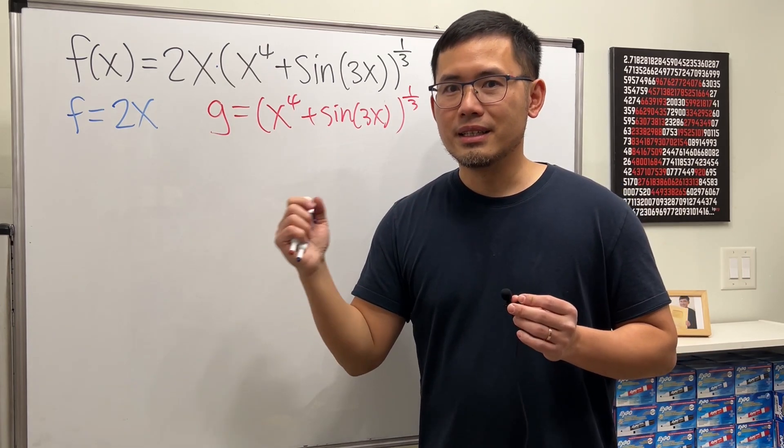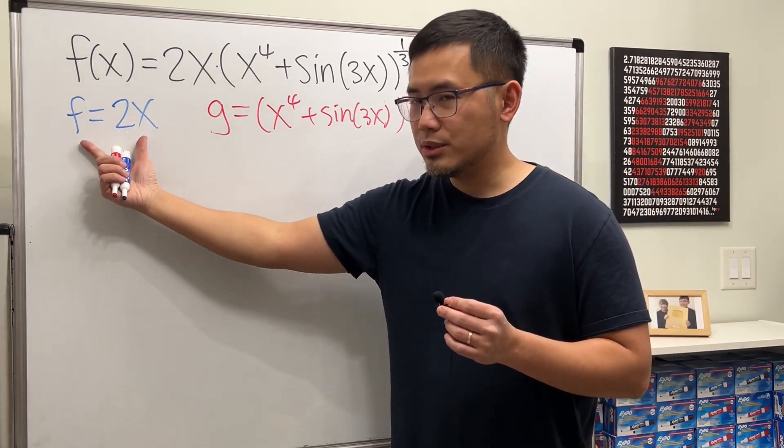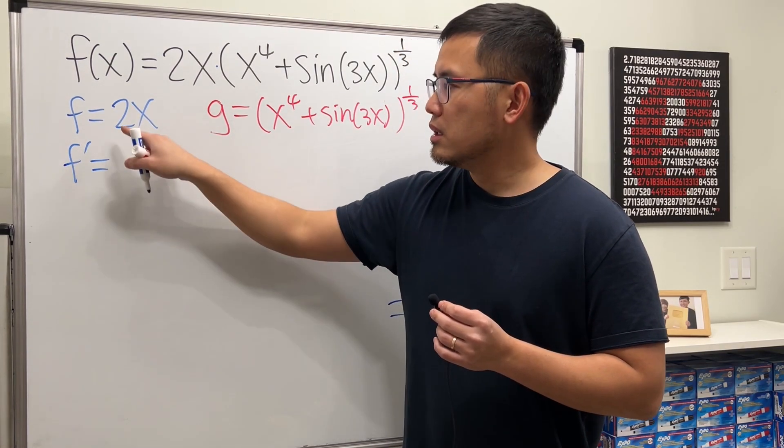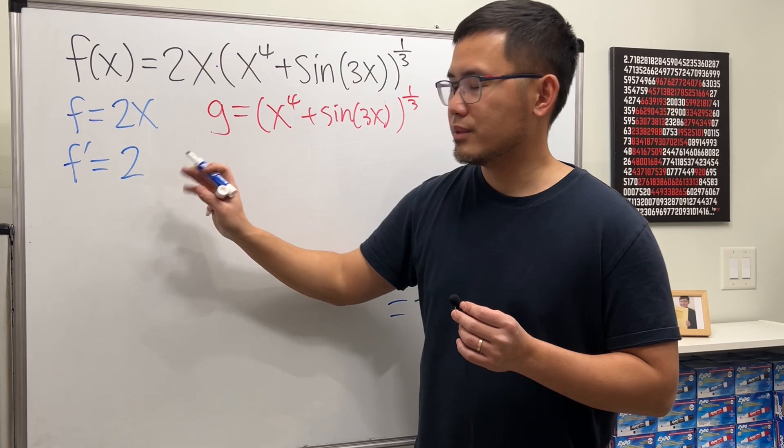Break them apart. The beauty is that once you have this by itself, just differentiate it. f prime equals the derivative of 2x is just 2.